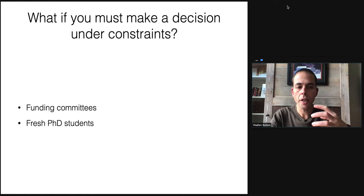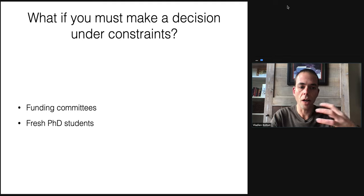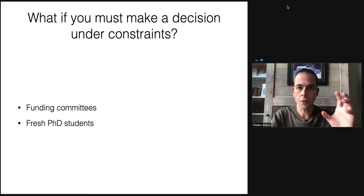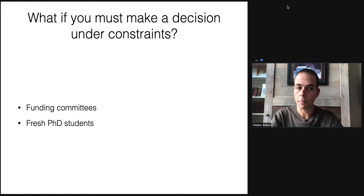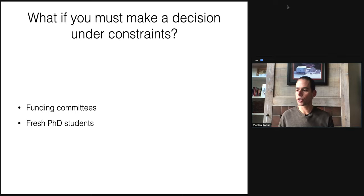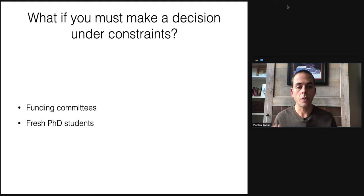A funding committee, to simplify a bit, may consist of about a dozen people. It may receive about a hundred proposals from different researchers who are applying for funding, and it may have the budget to select five. Five out of a hundred are going to get funded. The funding committee consists of people who have their independent careers, who have very busy lives. They may devote a weekend in total to making this decision, and during this weekend, they are going to pick five out of a hundred researchers who are going to get funded.